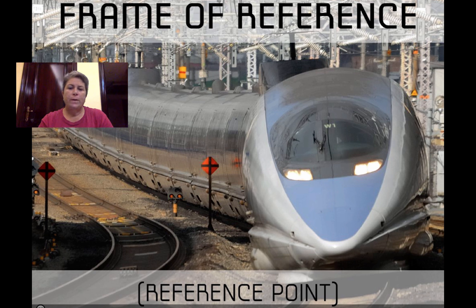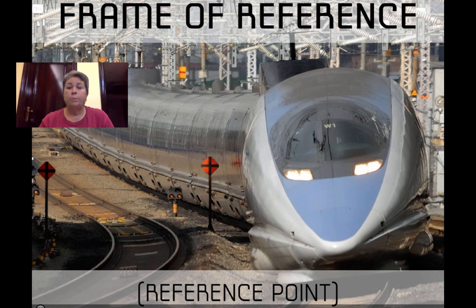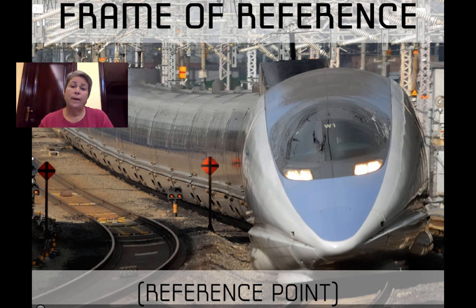How many of you have been on a bus or a train and it wasn't moving, but another train came in or left the station next to you, and for that split second you felt like you were moving? Your brain played a trick on you because you thought you were moving, since you were looking at another object outside of the train. So the best reference points are what we call fixed or stationary.